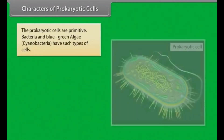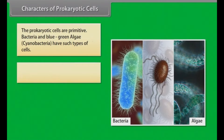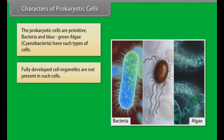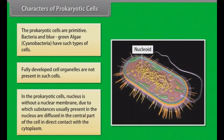The prokaryotic cells are primitive. Bacteria and blue-green algae, i.e., cyanobacteria, have such types of cells. Fully developed cell organelles are not present in such cells. In prokaryotic cells, the nucleus is without a nuclear membrane, due to which substances usually present in the nucleus are diffused in the central part of the cell in direct contact with the cytoplasm.